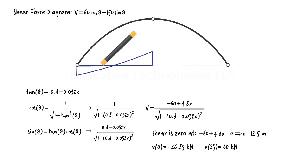Shear is negative 46.85 kN at the left end of the segment and 60 kN at the right end of the segment. We mirror what we just drew for the left half of the arch and place it on the right half of the x-axis to complete the diagram.